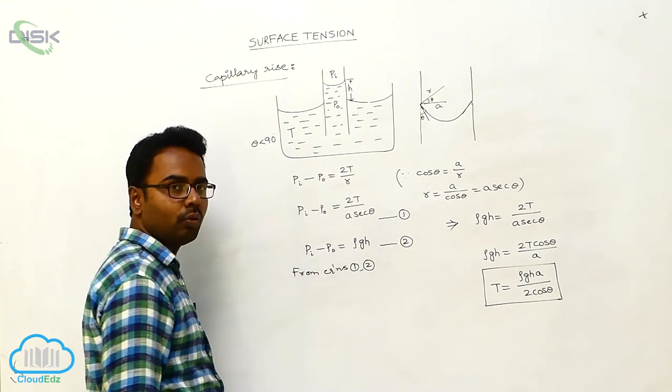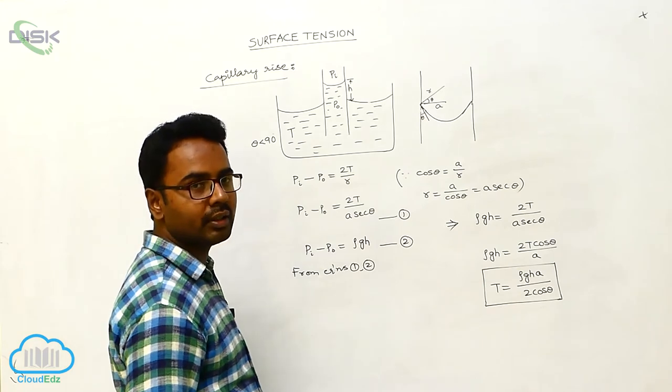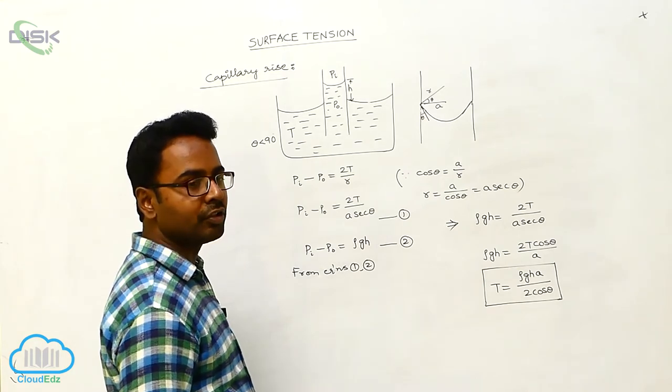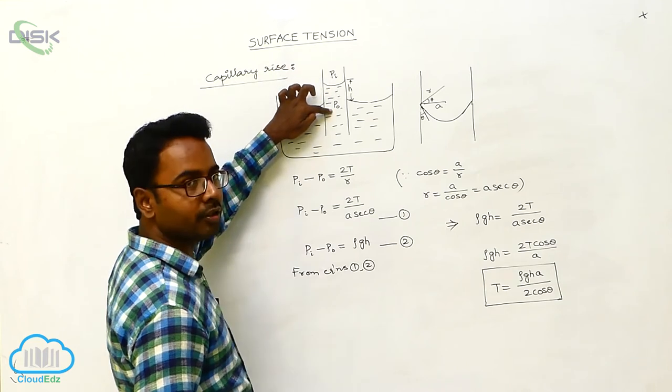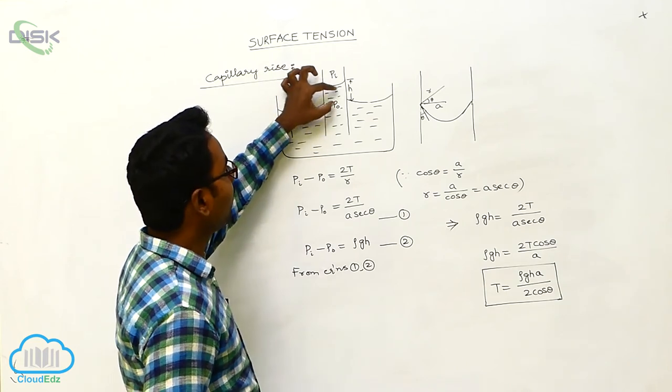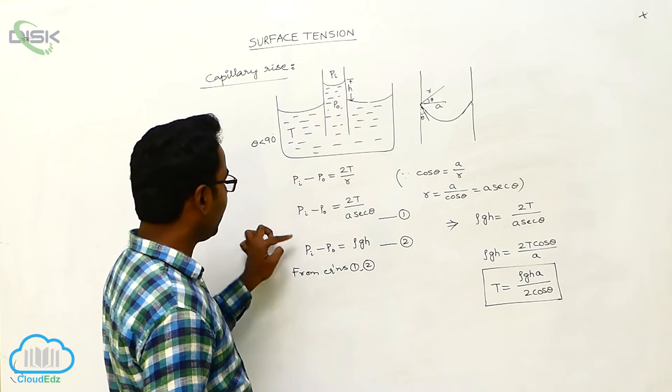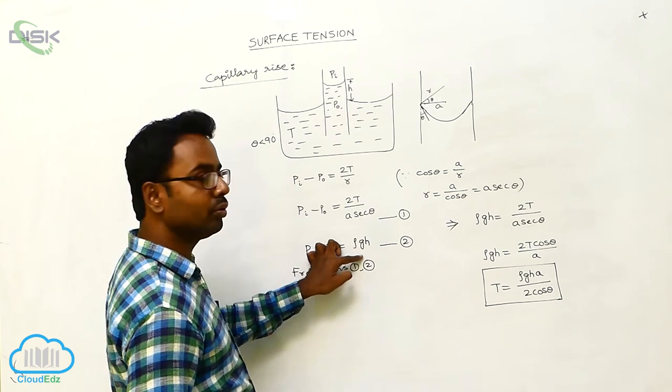As we discussed in the topic of variation of pressure with depth, at this point pressure is Pi, at this point pressure is P0 at a height of H. So we write Pi minus P0 is equal to rho GH.